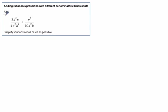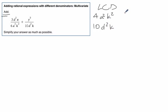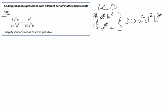Let's look at another example. In this case it's an addition, but our steps are the same — we've got to find the least common denominator. We have 4a squared k squared and 10d squared k. So the least common denominator is going to be 20 — that takes care of the 4 and the 10. Then we're going to need an a squared, a d squared, and a k squared. So there's our least common denominator: 20a squared d squared k squared.